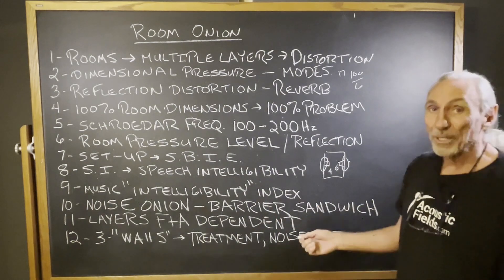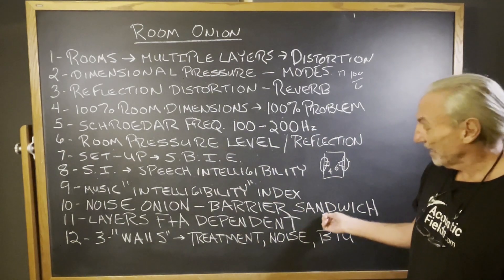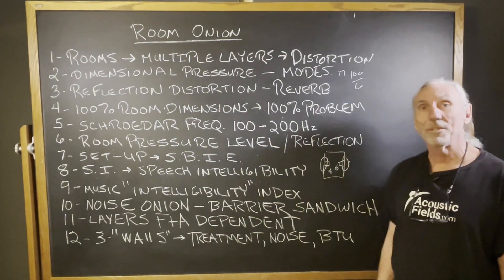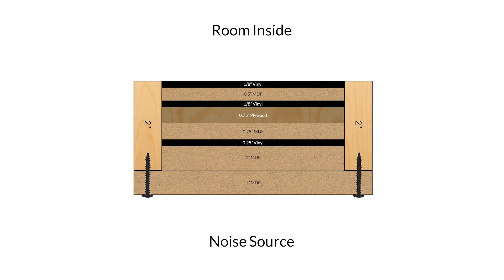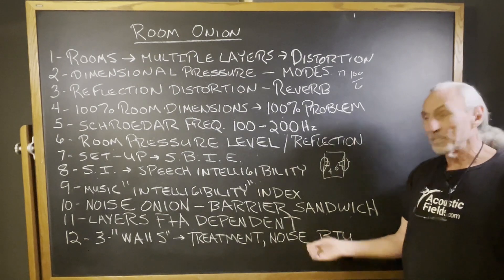Noise. Even our barrier technologies in our rooms have layers. So we have a sandwich, and you can see here in this graphic the multiple layers that we use, and we put these sandwiches between the studs. It's part of our design service for barrier noise technology. Layers are all frequency and amplitude dependent — more layers of the onion. Everything in the room is all about layers, peeling back those layers of distortion, layers of the right frequency and amplitude density to stop noise.